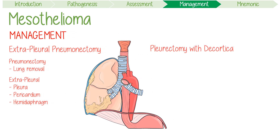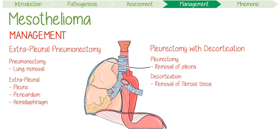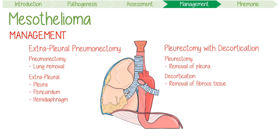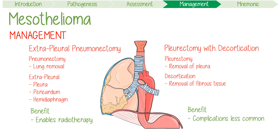The second surgical approach is pleurectomy with decortication, a similar but more limited procedure. A pleurectomy is the removal of the lung's pleura, while decortication refers to the removal of fibrous tissue that has abnormally formed on the surface of the lung. This means the pleura, pericardium, and diaphragm on the ipsilateral side are separated, while the actual lung remains intact. The benefit of EPP is that it enables post-operative radiotherapy, which decreases local recurrence, while the benefit of pleurectomy with decortication is that complications are less common.